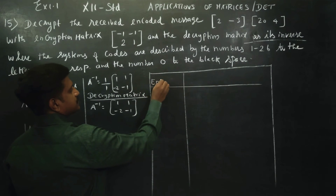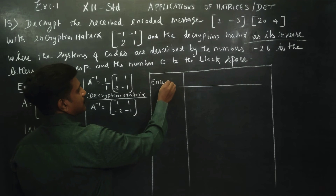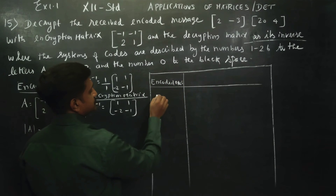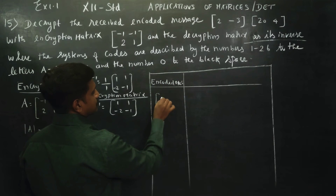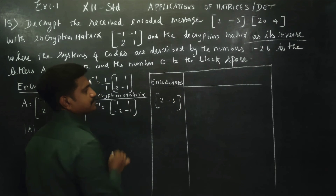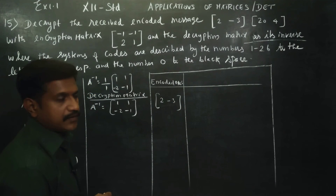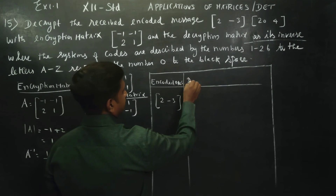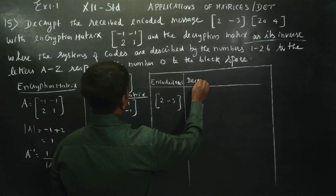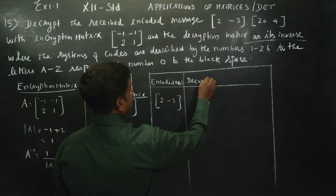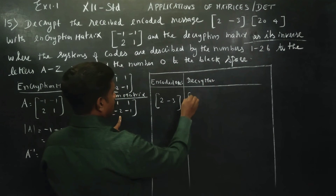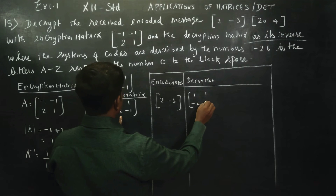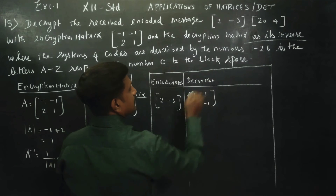The encoded message is 2, minus 3. My decryption matrix is 1, 1, minus 2, minus 1.